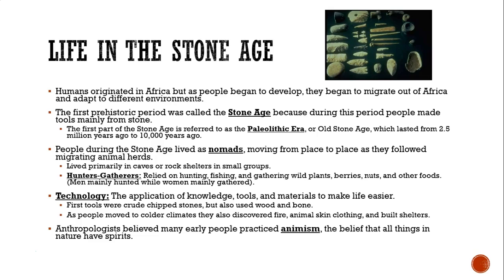Anthropologists believed that many of the early people practiced a religion called animism. Animism is the belief that all things in nature have spirits — the plants have spirits, the animals have spirits, and they all celebrated that.